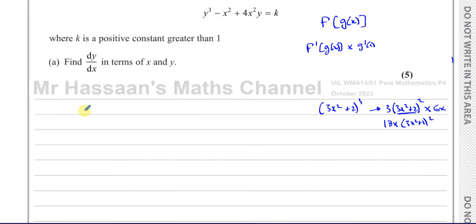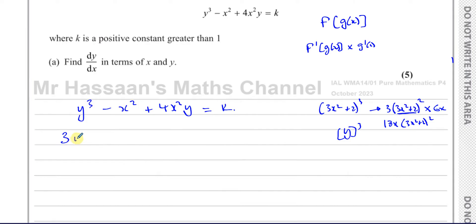We know y is some function of x. So when we differentiate y³, the y is like the 'inside' function. We multiply by the power and reduce it by one — giving 3y² — and then multiply by the derivative of y with respect to x, which is dy/dx. So differentiating y³ with respect to x gives 3y² dy/dx.